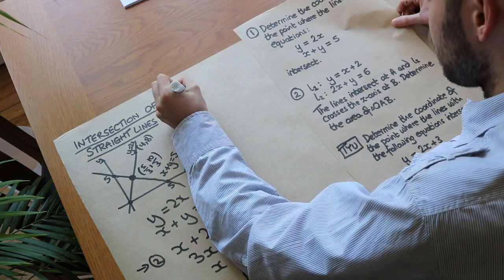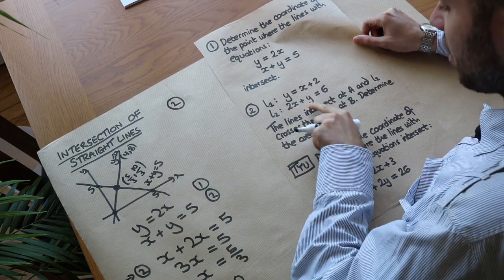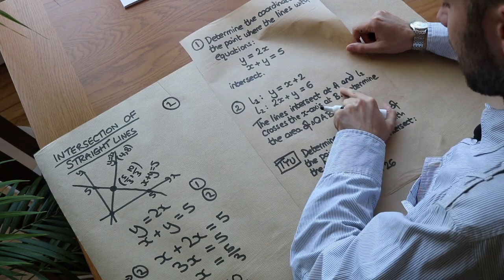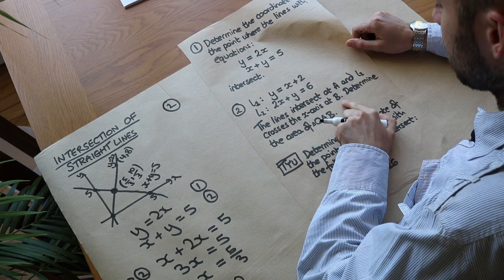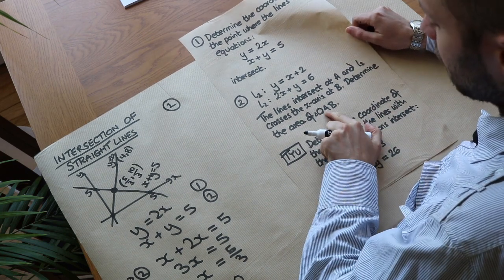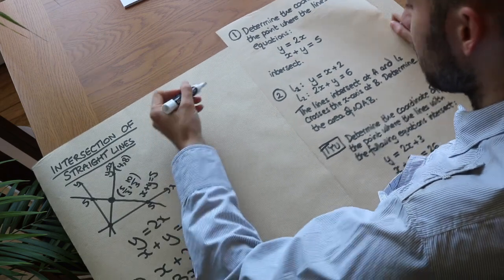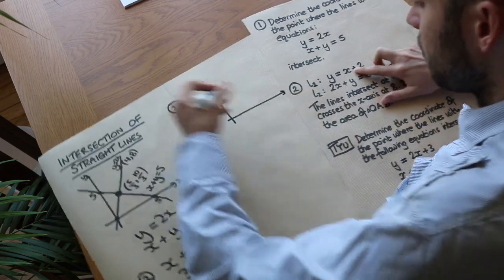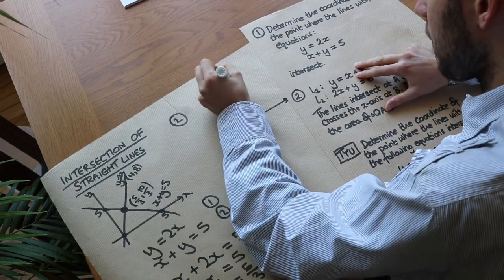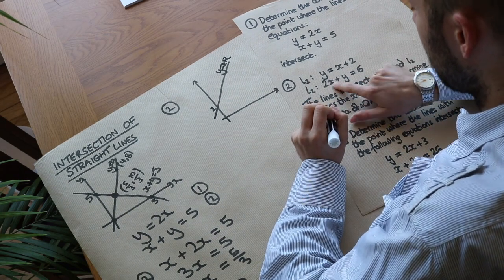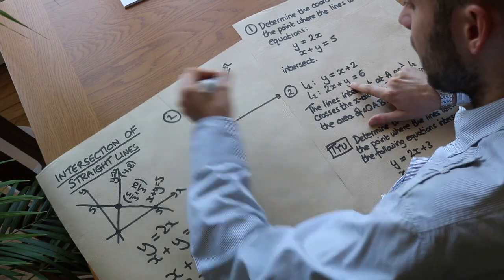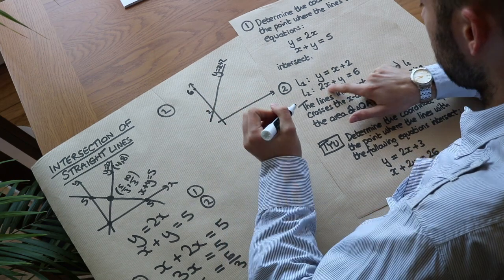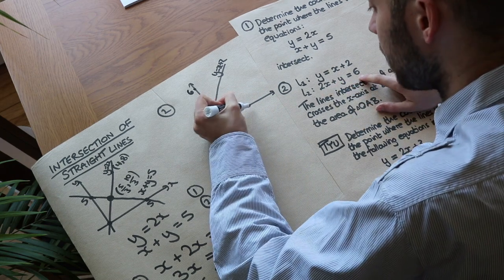Let's do a second example. We have equation 1: y equals x plus 2, and equation 2: 2x plus y equals 6. The lines intersect at A, and L2 crosses the x-axis at B. We need to find the area of triangle OAB. Sketching: y equals x plus 2 looks like this; for 2x plus y equals 6, when x is 0, y is 6, and when y is 0, x is 3, so the second line looks like this.